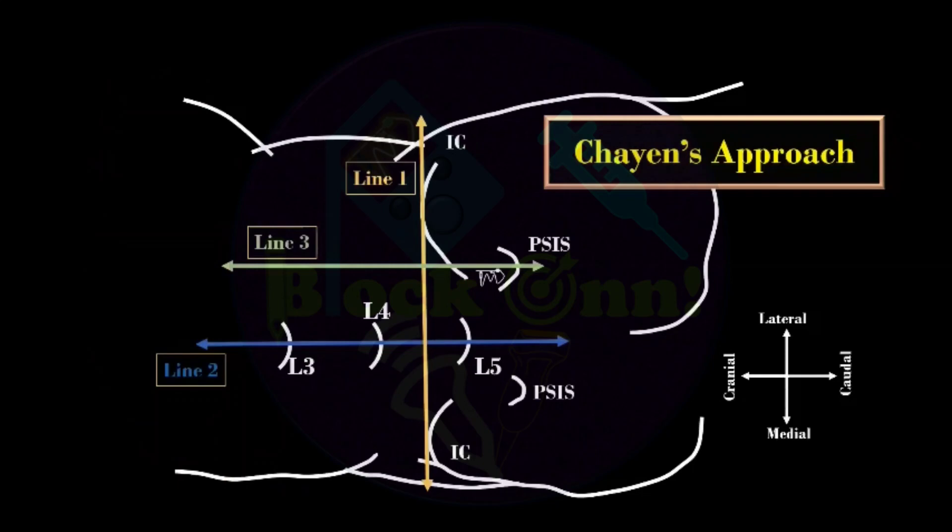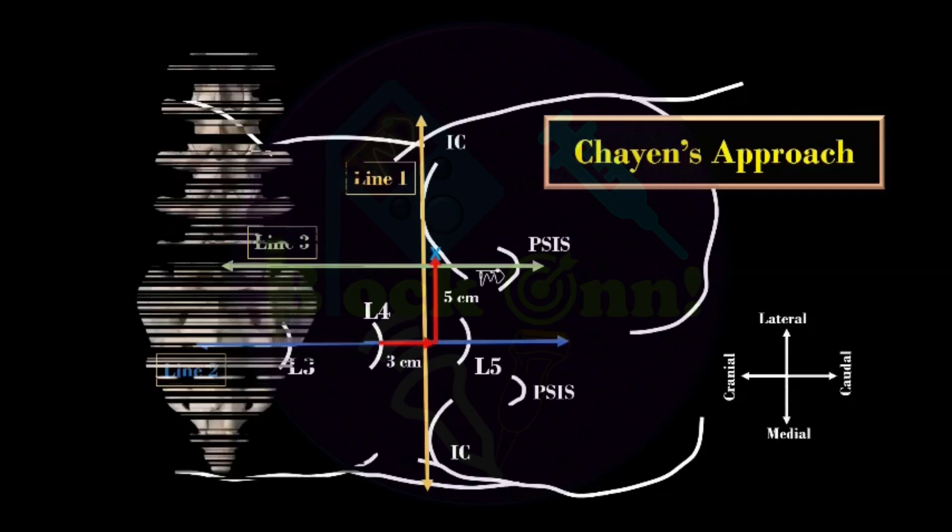In Chain's approach, what was the modification? 0.3 cm below the L4 spinous process and 5 cm lateral was chosen. This point usually comes below the fifth transverse process. Here the problem was redirection or manipulation of the needle in caudally was not possible because of the small space, so cephalad redirection was recommended. This was also too lateral.